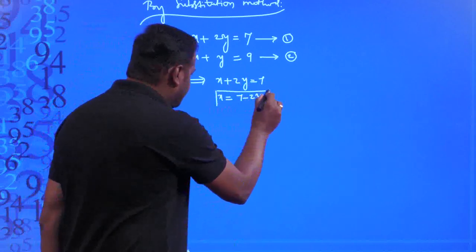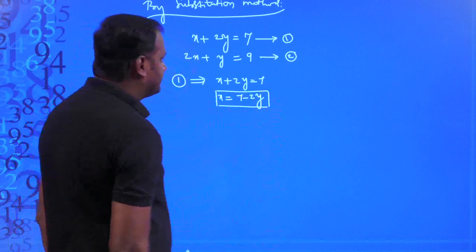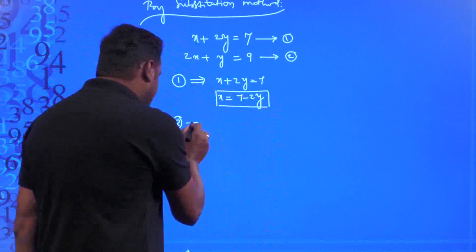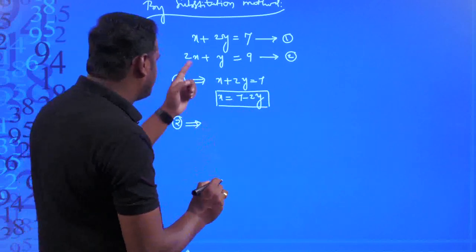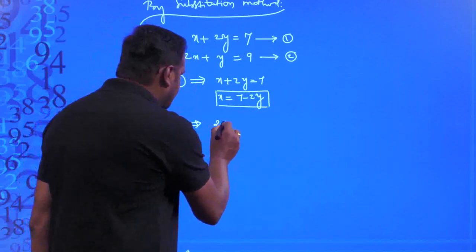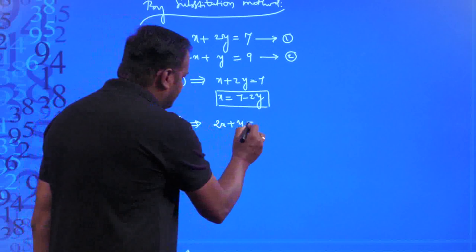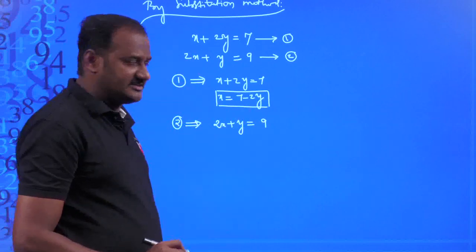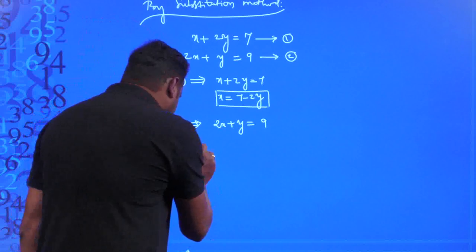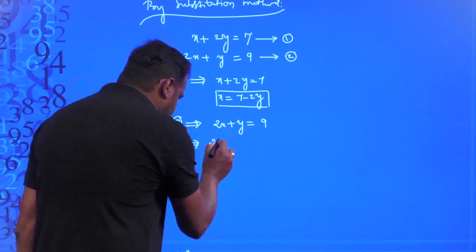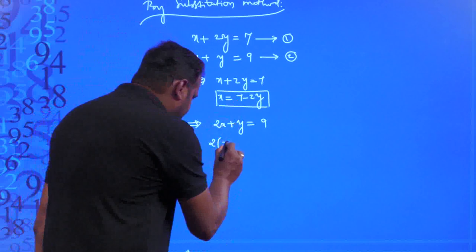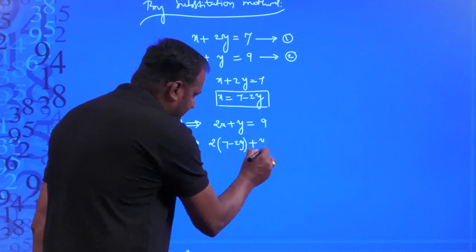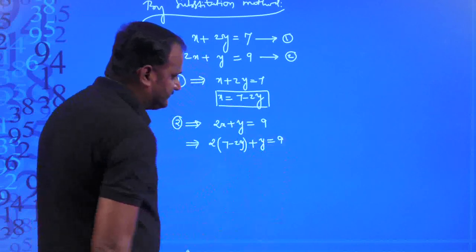From the first equation x + 2y = 7, we get x = 7 − 2y. Now substitute x = 7 − 2y into the second equation 2x + y = 9. Wherever you find x, substitute 7 − 2y in its place. That gives 2(7 − 2y) + y = 9.